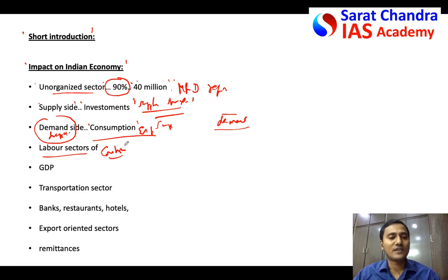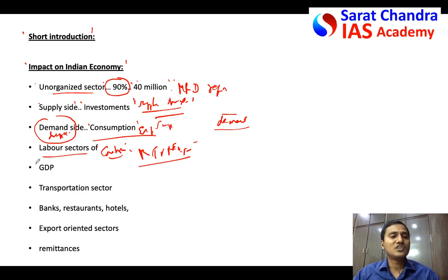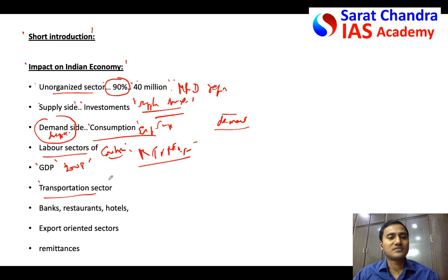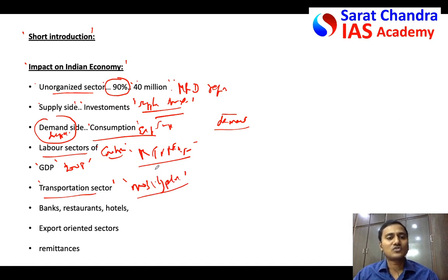In the labor sector, construction labor is large in number in India due to increasing infrastructure development. They had a lot to lose because of COVID-19. Also, many people employed daily-wage in MGNREGA were affected. Even the GDP of India fell drastically — this is the biggest fall in GDP after the 2008 crisis. The transportation sector was highly affected because mobilization was restricted due to lockdown — airlines, road transport, and railways were all impacted.